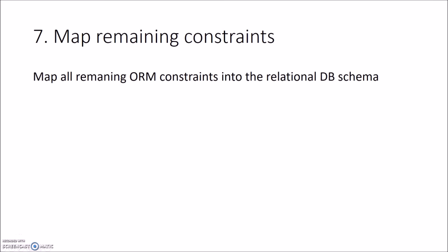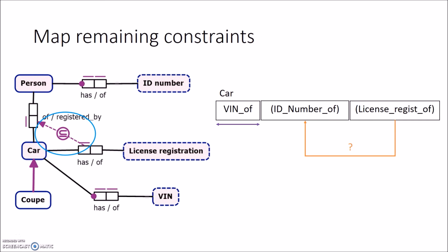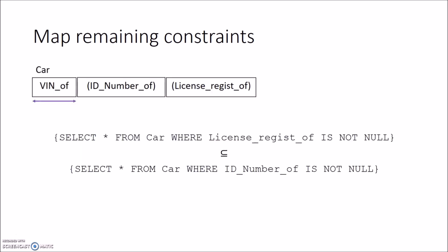The last step in our algorithm is to map any remaining constraints. In our example, we have one constraint that is not mapped yet. The role subset constraint implies that when a car has a license registration, it should always have a person that registered it. But this is a constraint that a relational database schema does not support natively, so we need a way to enforce it. We can solve this by defining the constraint in SQL and ensuring that all queries on this table will comply with this statement.